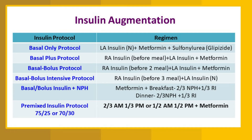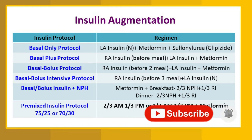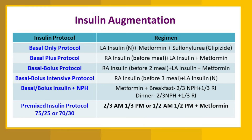If the basal-only protocol doesn't work and blood glucose levels are still high, we step up to the basal-plus protocol, where a rapid-acting insulin is introduced before one meal, along with long-acting insulin at night or in the morning with metformin. If that still doesn't work, we step up further to the basal-bolus protocol, where rapid-acting insulin is given before two meals with long-acting insulin and metformin.